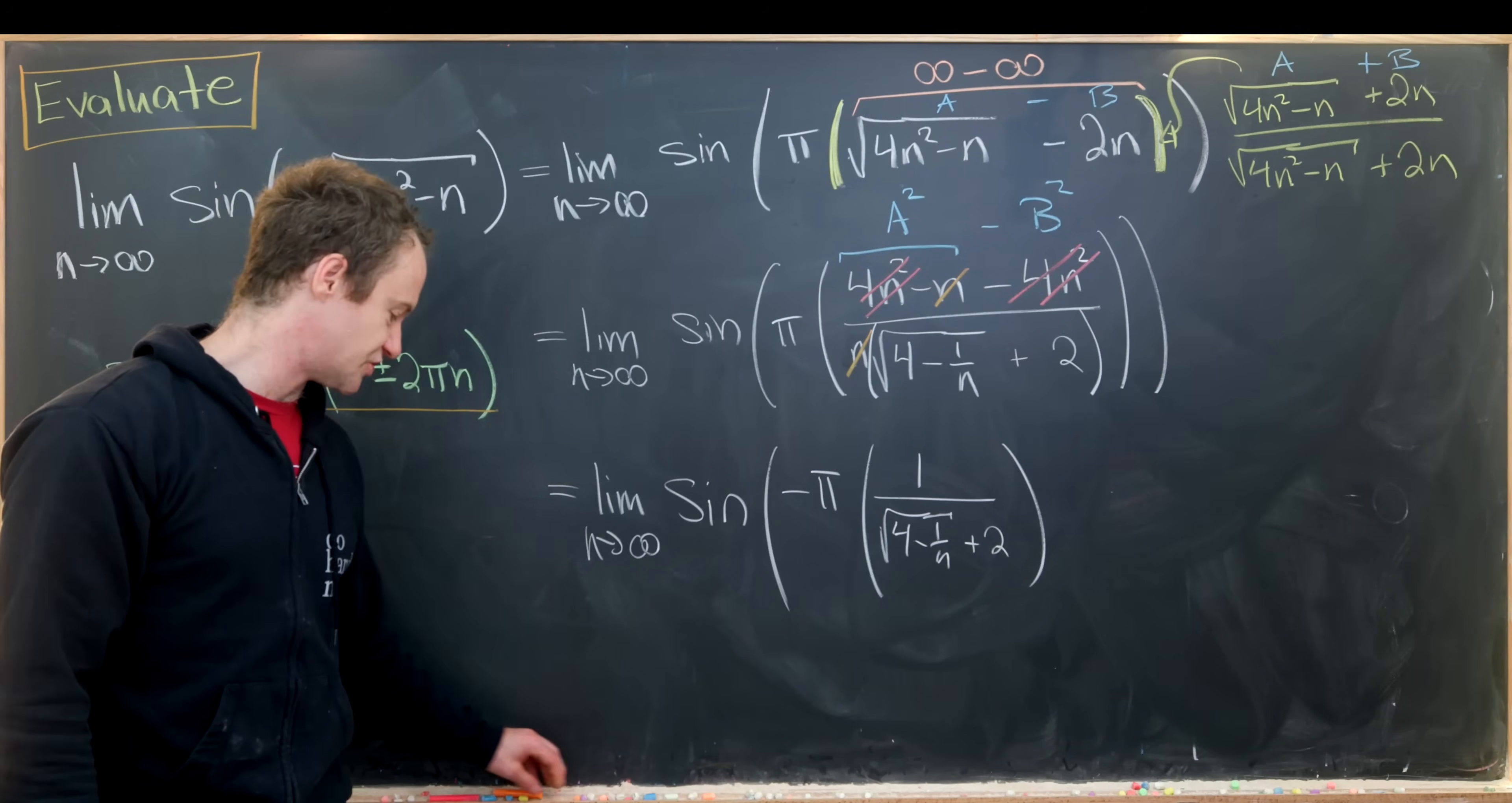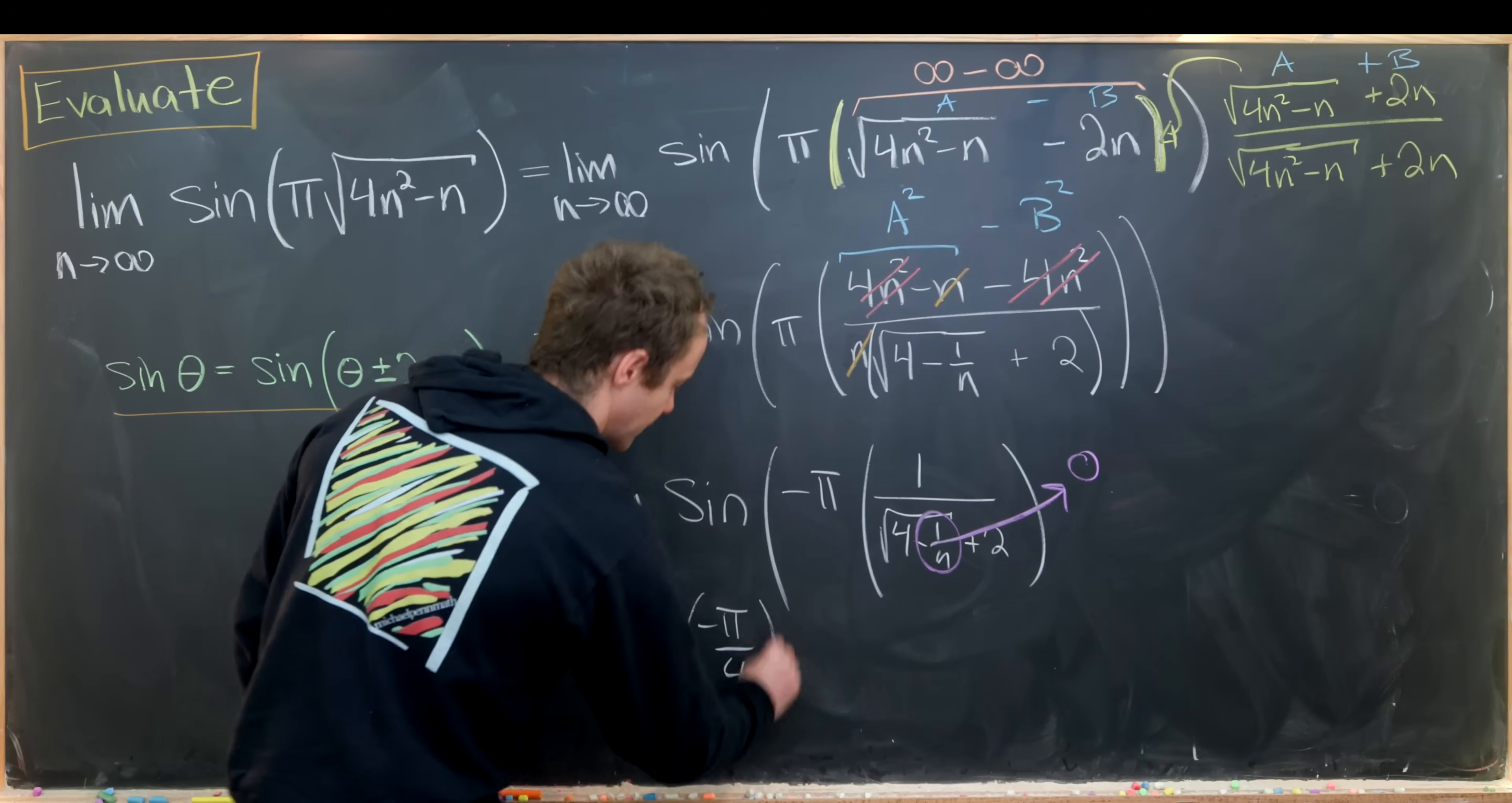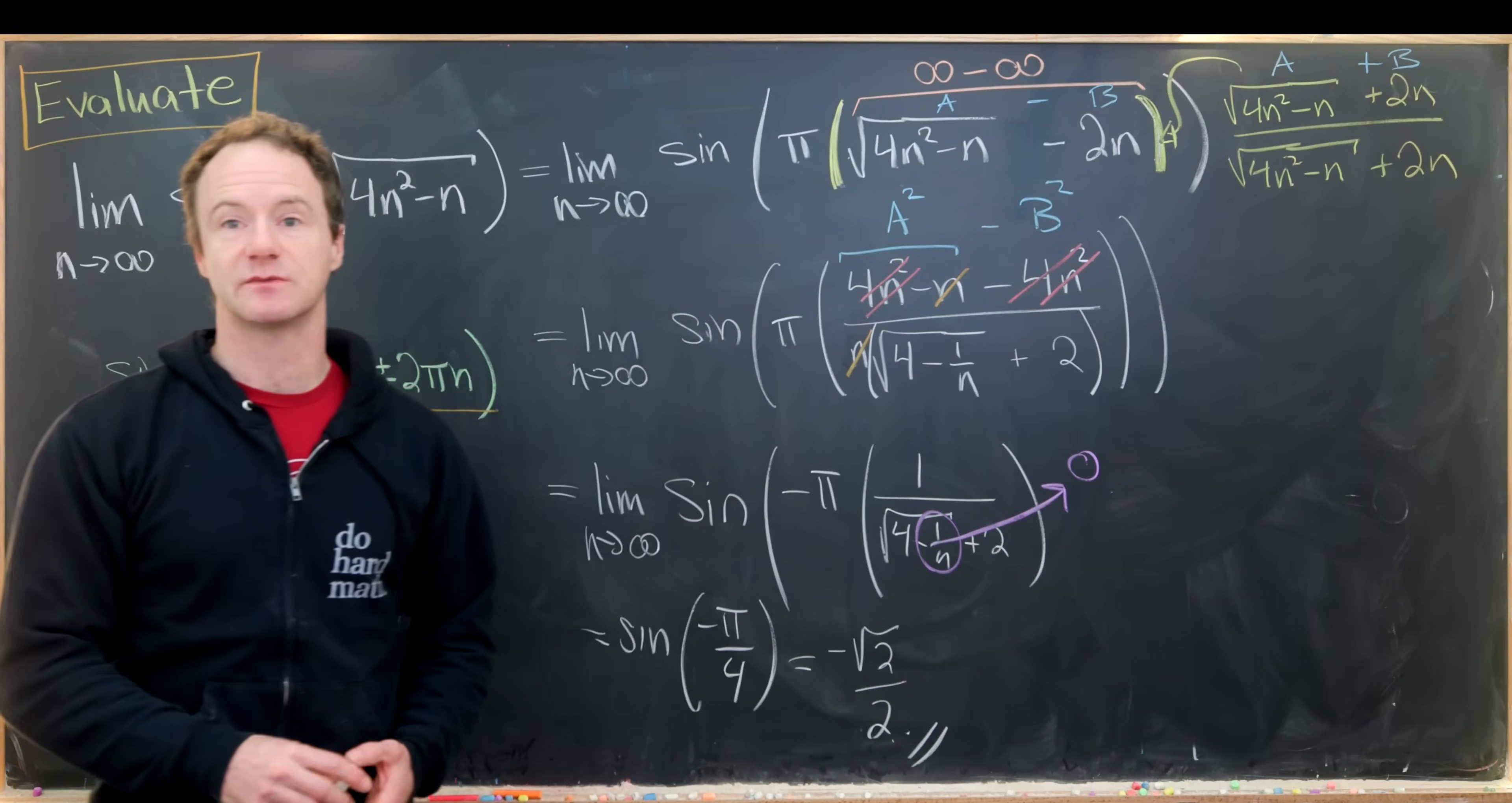But now let's let n approach infinity. We can in fact bring the limit inside because the inside clearly has a limit and sine is a continuous function. So as n approaches infinity this guy trends off towards 0. And we end up with something that looks like sine of minus pi over 4. It's minus pi over 4 because we have the square root of 4 plus 2. The square root of 4 plus 2 is clearly equal to 4. But we know the value of sine here. It's minus the square root of 2 over 2. And so we've calculated our goal limit. And that's a good place to stop.